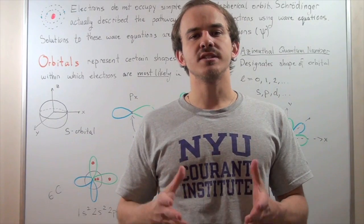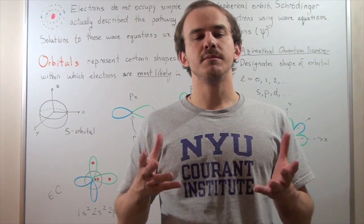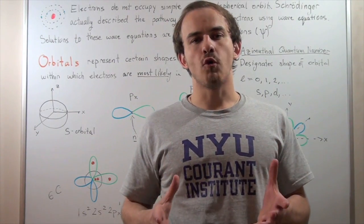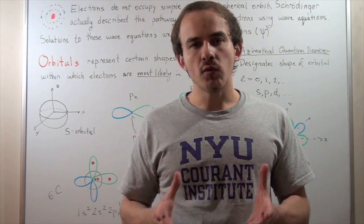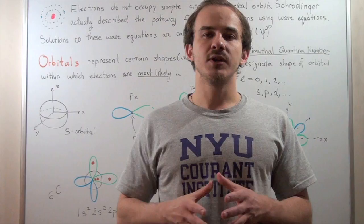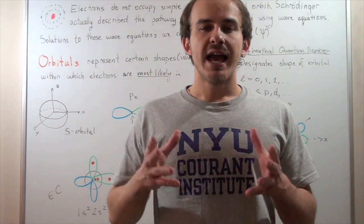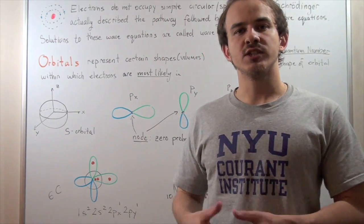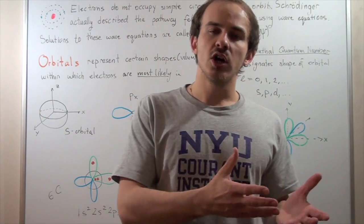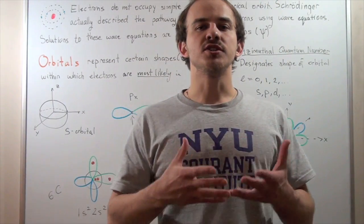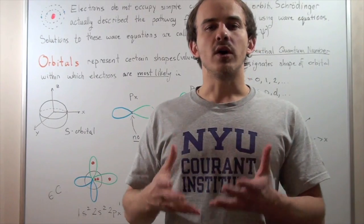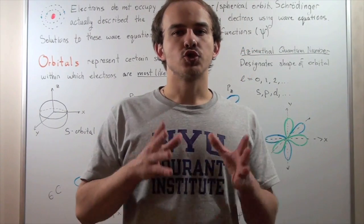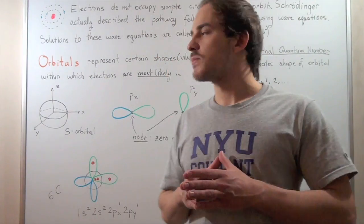Organic chemistry is essentially the study of covalent bonds, and covalent bonds are formed by the overlap of atomic orbitals. And that means, in order to understand what covalent bonds are, we must first understand what atomic orbitals are. So, let's begin.